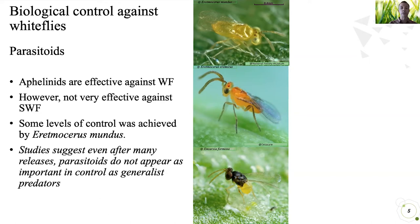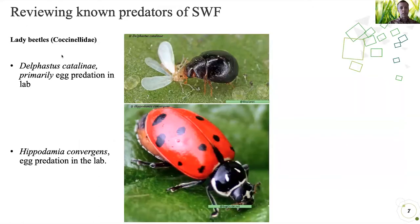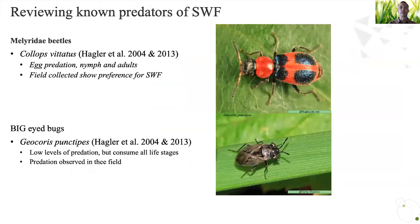Some of the generalist predators are beetles and bugs, and in particular ladybugs. There are also some mites that have been used in vegetable systems. For the ladybugs, there's this dark colored one, Lophastus, and it eats primarily on eggs but has been shown to eat on multiple life stages. Similarly, Hippodamia, observed from within the lab but also viewed in the field. In our system here we also have Scymnus, which is observed to feed on aphids but also feeds on whiteflies. There's another beetle that in the southwest does consume all life stages and appears quite effective.